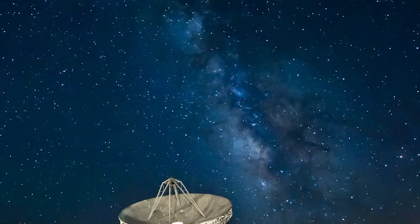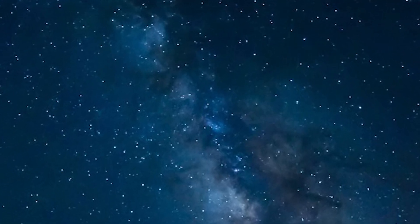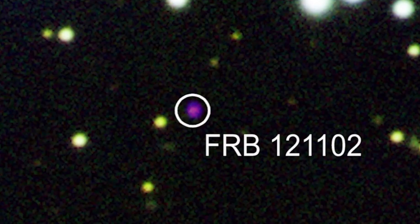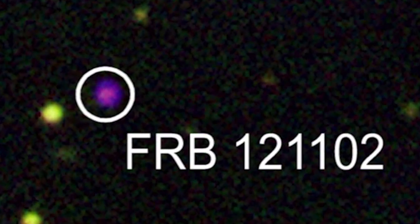If FRBs come from a pulsar, they emit radio waves that move in a smooth fashion across many frequencies. But that is not the case with FRB 121102.